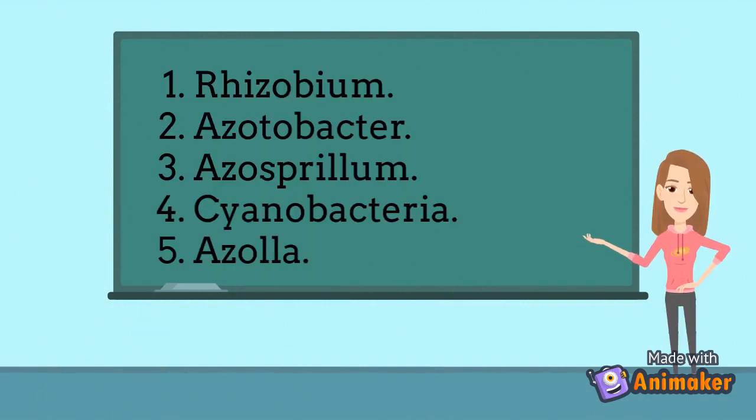Number 1: Rhizobium. It is a symbiotic nitrogen-fixing bacteria that infects the legume roots and forms root nodules.